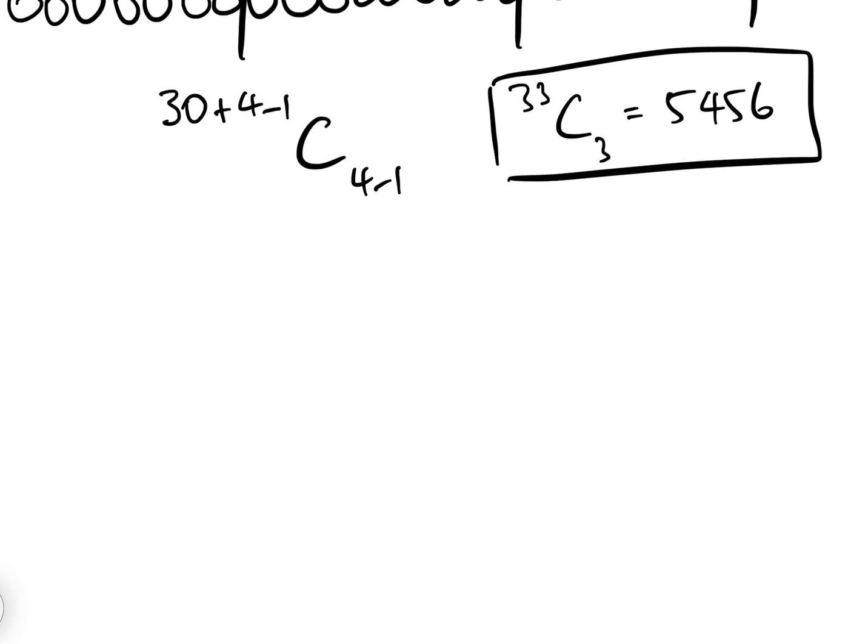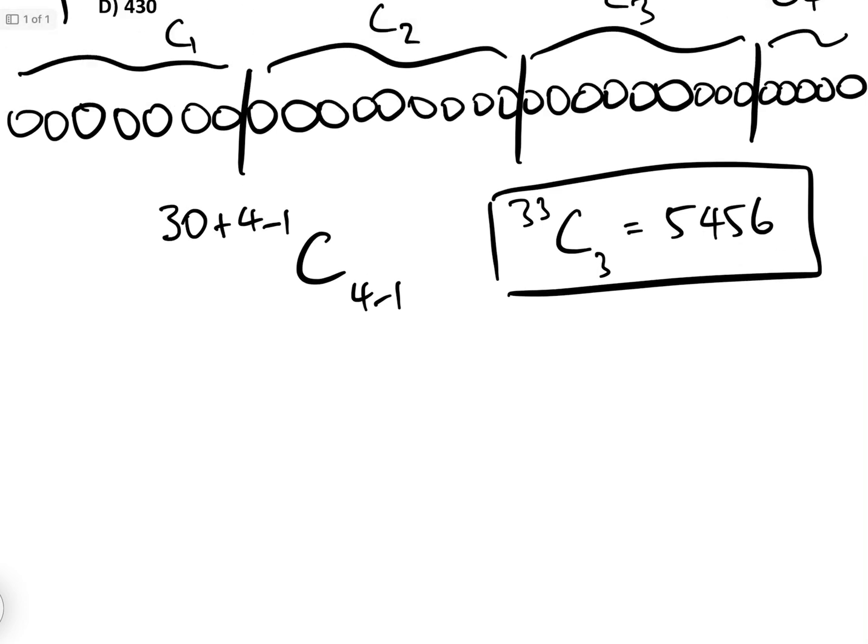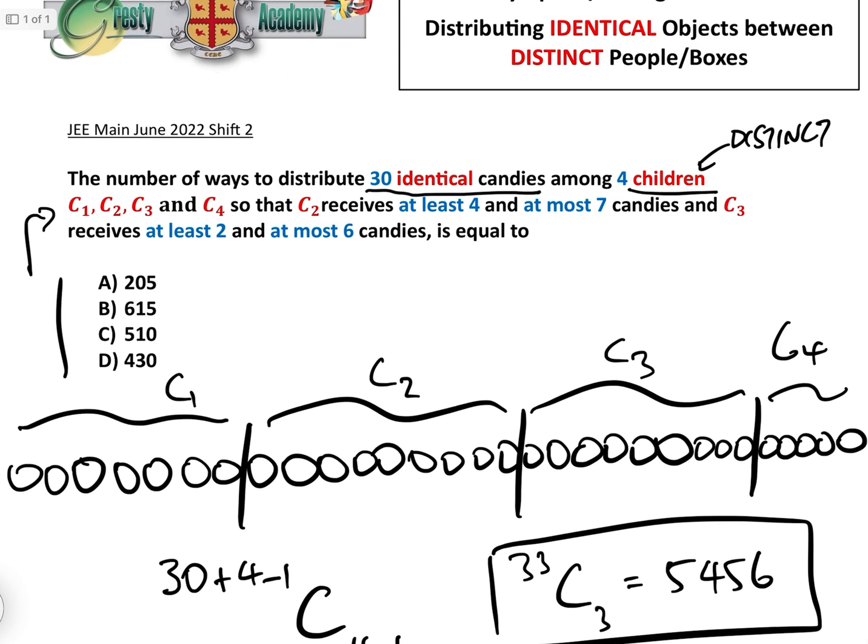So what we're going to do is first of all, because we know that C2 receives at least 4 and C3 receives at least 2, let's give C2 one, two, three, four, let's give him four and let's give C3 two.